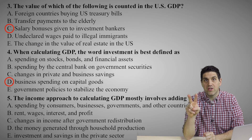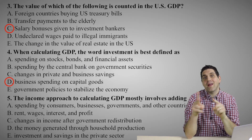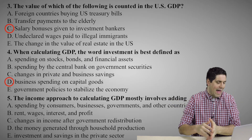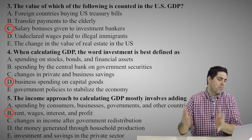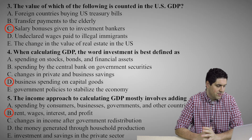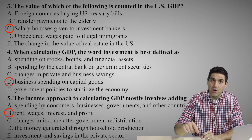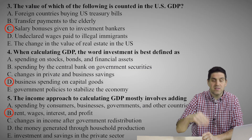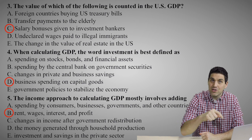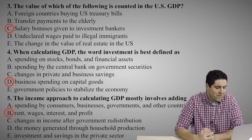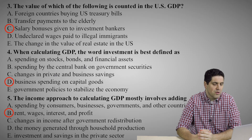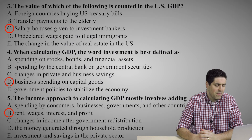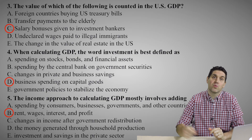For question number five, there are two different ways of calculating GDP. You can add up all the spending — the spending approach — or you can add up all the income — the income approach. The income approach adds up all the wages, rent, interest, and profits. The answer was B. Answer A would be correct for the expenditures approach. Changes in income after government distribution — no. Household production doesn't count towards GDP. Investment and saving in the private sector — no. The right answer, no doubt about it, for the income approach was B.